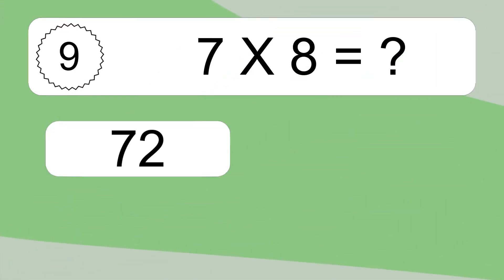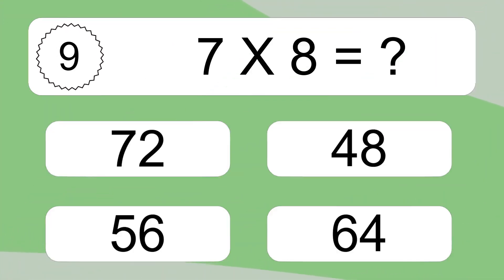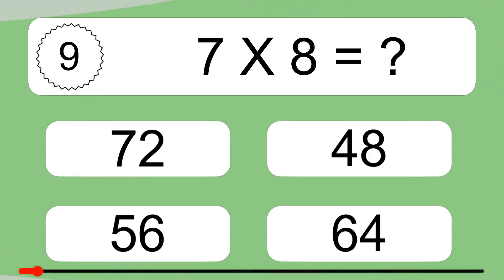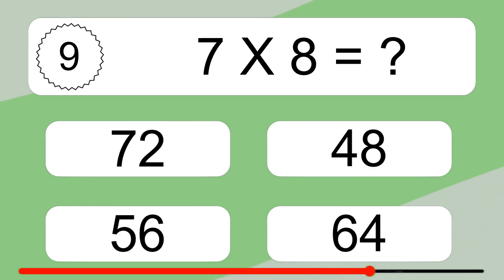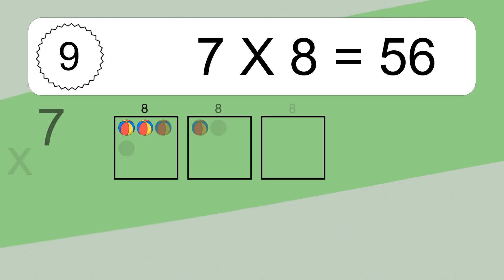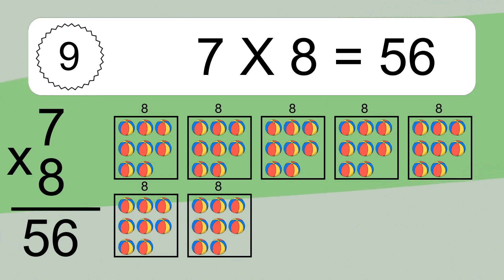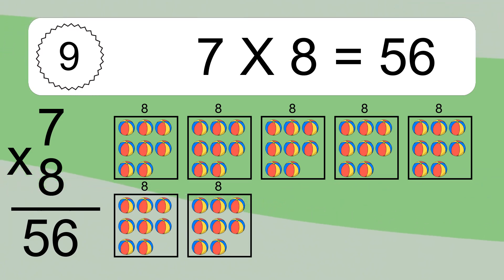7 times 8 equals what? 7 times 8 equals 56. We have 7 boxes and each box has 8 colorful balls inside. If you count all the balls in all the boxes together, you will have 7 times 8 balls. This equals 56 balls.